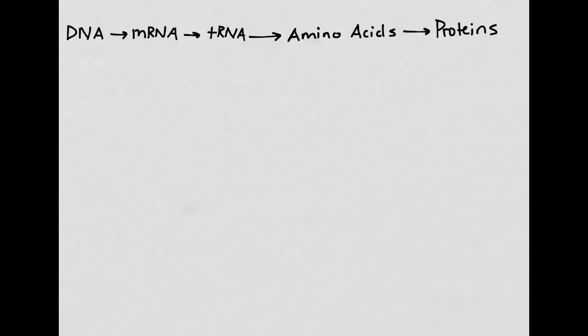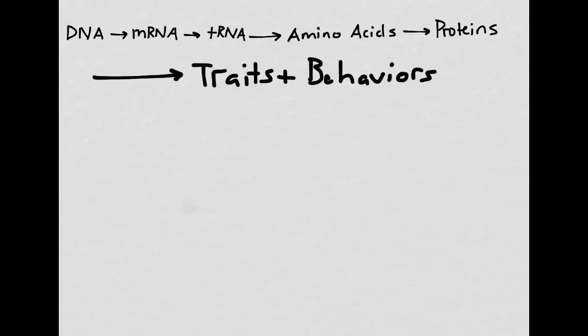Before we dive into evolution, we need to review something very important from earlier this term. This is the central dogma of biology, where DNA codes for mRNA, which codes for tRNA, which codes for amino acids, and amino acids are folded into proteins. We're going to add to that by reminding ourselves that the different proteins you create are going to influence some of your traits — physically and also some of your behaviors. Having different genes and different DNA can actually change the way that you conduct yourself and behave.